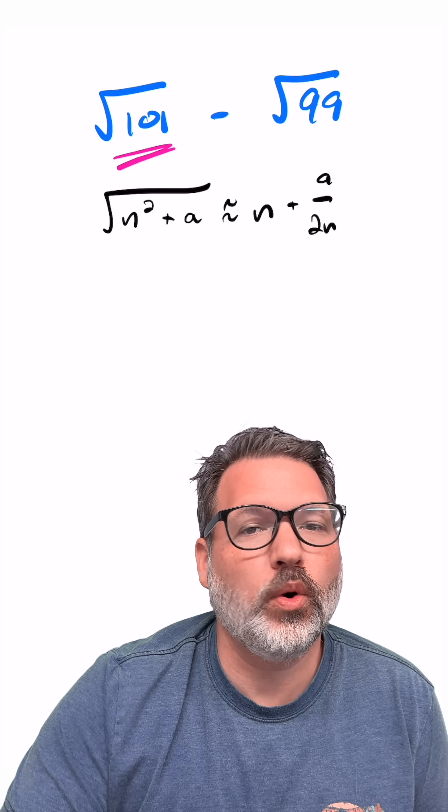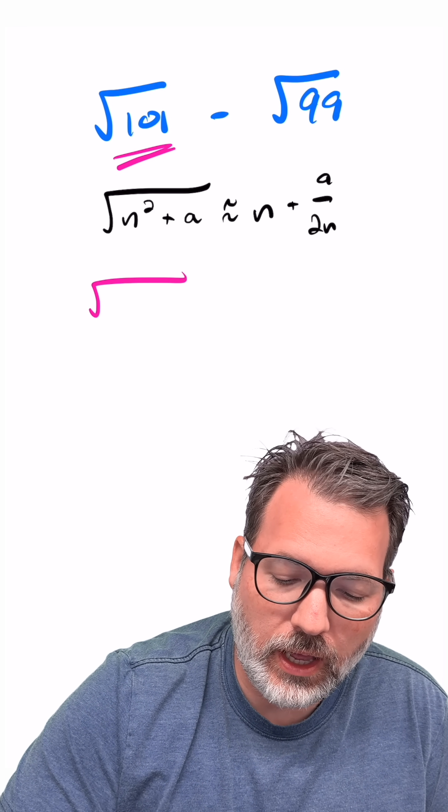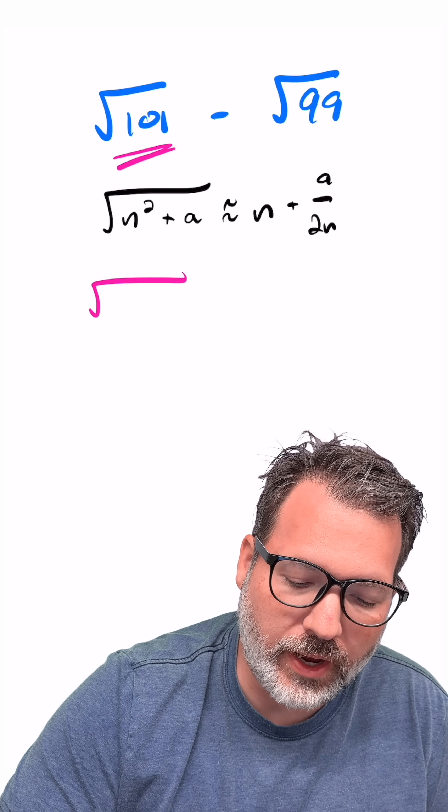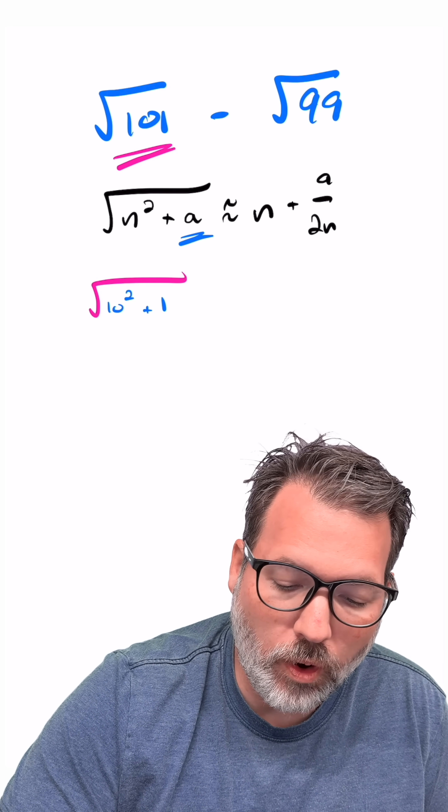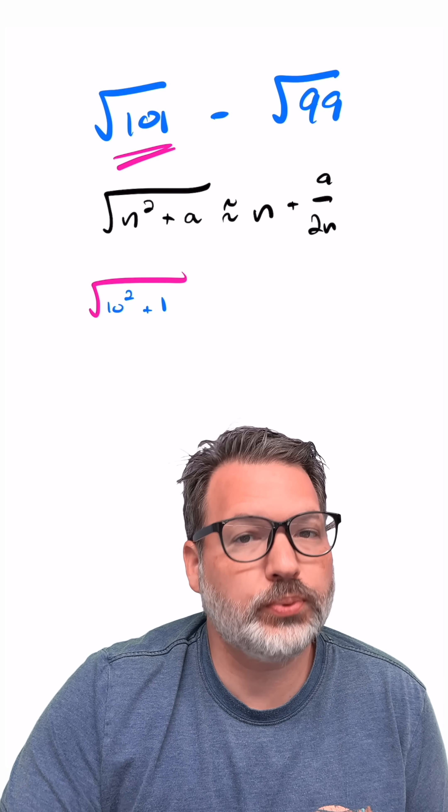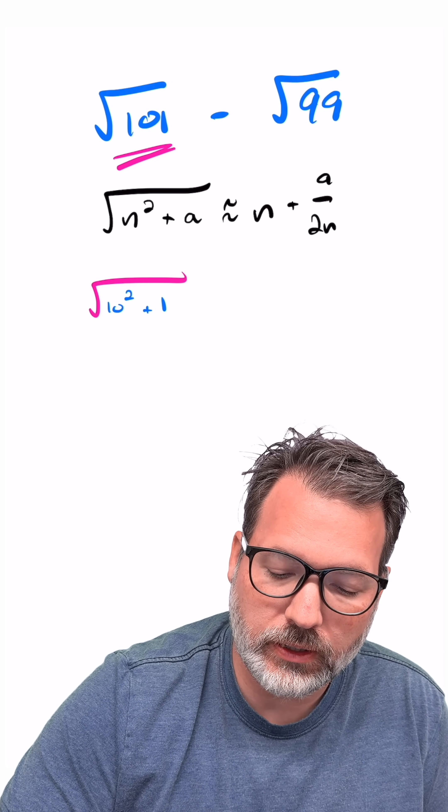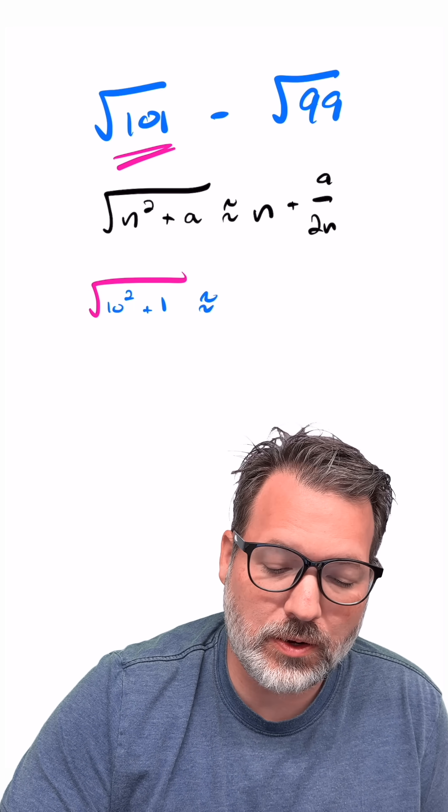So let's look at this with one of these examples in particular. 101, we are going to rewrite as 10 squared—that's the perfect square part—that's the 100 plus 1. 1 will be our value for a, and it's pretty small compared to 100. So this should be roughly equal